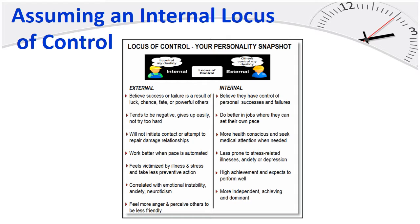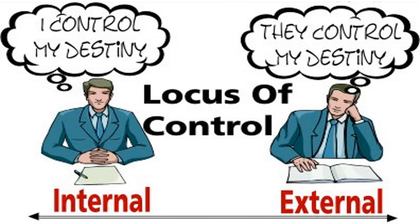Those with an external locus of control also feel more anger and perceive others to be less friendly. Those with an internal locus of control believe they have control over personal successes and failures, do better in jobs where they set their own pace, are more health conscious and seek medical attention when needed, are less prone to stress-related illnesses, anxiety, or depression, and are high achievers who expect to perform well, and are more independent, achieving, and dominant. Which would you rather be — internal, where you control your own destiny, or external, where everyone else controls your destiny?